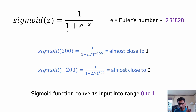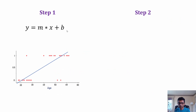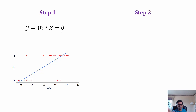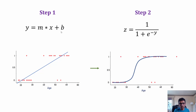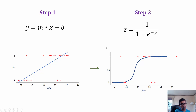Why do we need a sigmoid function? There are two steps. In step one, we draw a linear line using linear regression: y = mx + b, where x is age and b is some bias. In step two, we apply the sigmoid function — you take the linear line from step one and apply sigmoid, which transforms it into the S-shaped curve. The sigmoid takes y from step one and converts it into the nice curve better suited for classification.